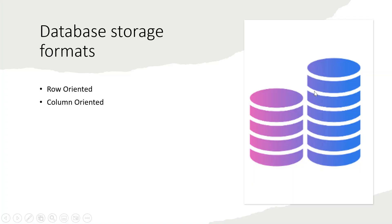When we talk about database storage formats, there are two formats in which the data we are writing into a database is stored. When we are inserting data into a table, in the background that data is getting stored on the disk in some format. That format can be either row-oriented or column-oriented, and how they enhance the performance of our queries — or which format is better suited and why — is what we want to look at.